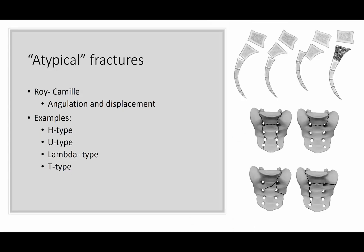Atypical, or so-called atypical fractures, are these U-shaped, H-shaped, lambda-type, T-type injuries. That's one way to describe them — a sort of anatomic morphologic description.